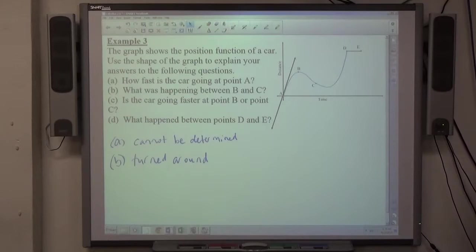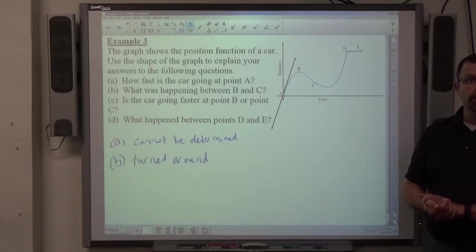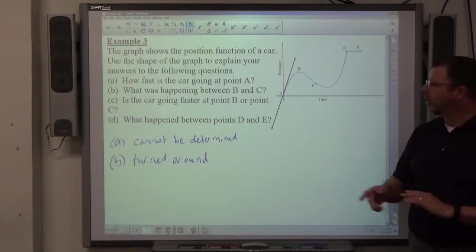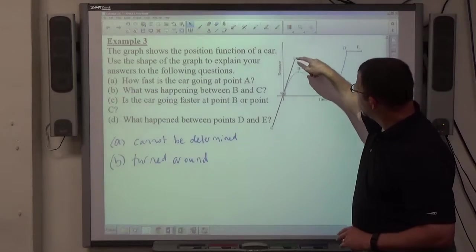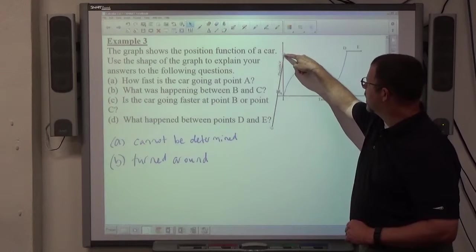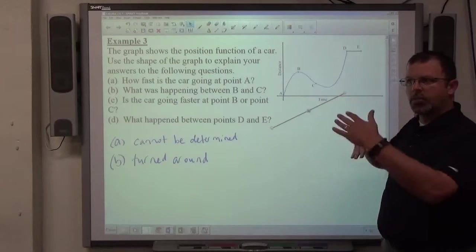Is the car going faster at point B or point C? Now, I can't tell what the slope of either one of those is. But I can tell which one's steeper. And steeper means faster. So, this speed right here would be less than that speed right there. And that speed right there is more than this speed right here. Alright. So, you can determine, based on the steepness of a line, if one is faster than another.